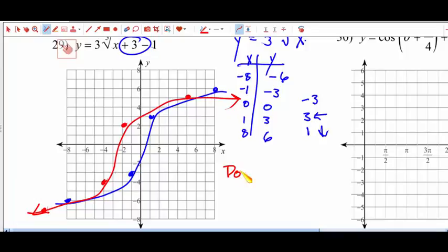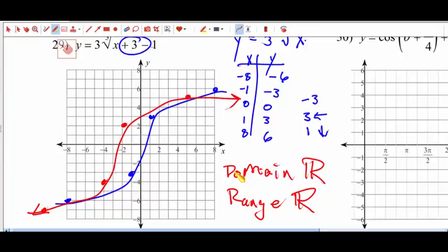And the domain is all real numbers, and the range is all real numbers. And that's what the domain and range will always be for cube root functions.